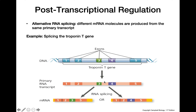For example, if the cell decides to keep exon 3 and remove exon 4, we get one version of the mRNA. If instead it keeps exon 4 and removes exon 3, we get a completely different version of the mRNA, which results in the production of a different protein.